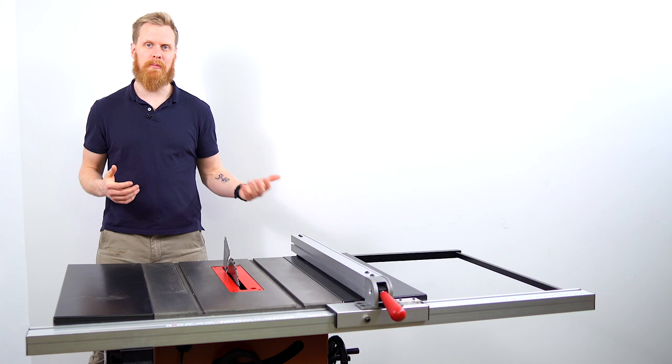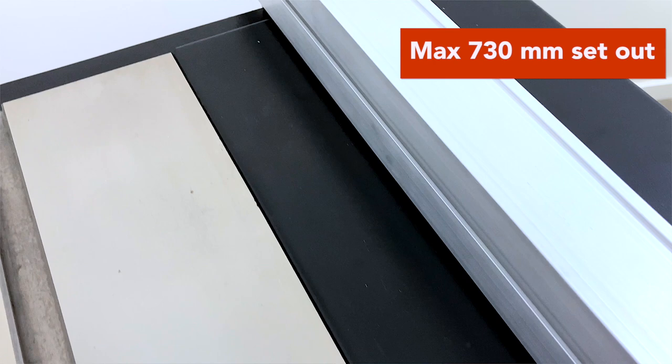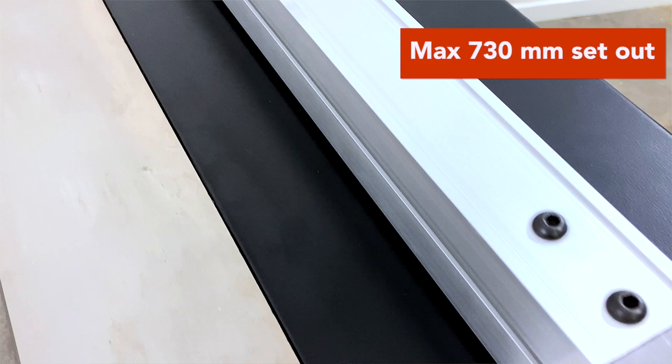The rip fence itself is made of a cast alloy aluminum so it is very lightweight and easy to slide up and set to whatever width you need. The rip fence will set out to a maximum of 730 millimeters which means you can cut up a 24 by 12 sheet. You can at least rip it in half.